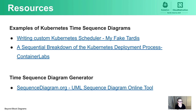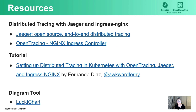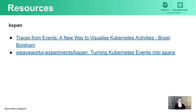I used a lot of resources to prepare this talk and I've listed them out here. There are some outstanding examples of Kubernetes time sequence diagrams available, and I created my sequence diagram at sequencediagram.org. For distributed tracing I used Jaeger and was tracing Ingress Nginx. I'd like to call out again Fernando Diaz and his tutorial on setting up distributed tracing in Kubernetes. And look into K-SPAN — the tool that uses Jaeger to visualize Kubernetes events — there is a KubeCon talk from 2021 about it as well as the GitHub repo with documentation.